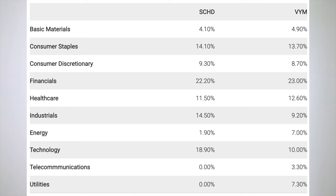As we'd also probably expect, SCHD has higher ESG scores, if you care about that sort of thing. Dividend yield is similar between these two funds, with SCHD's being slightly higher by about a quarter of a percent at the time of this video. Notice how SCHD has zero or low exposure to utilities, telecom, and energy. These sectors are notorious for high dividends but relatively weak profitability, which is why SCHD's screens exclude them, but VYM still holds them. Both SCHD and VYM are highly liquid and have the same low expense ratio of 6 basis points.